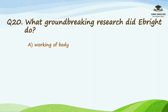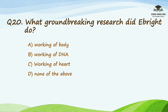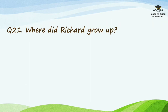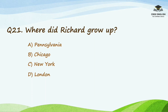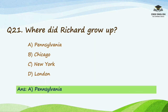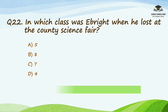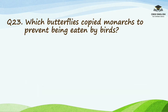Question number twenty: what groundbreaking research did Ebright do? Options are working of body, working of DNA, working of heart, or none of the above. The right answer is working of DNA. Question number twenty-one: where did Richard grow up? Options are Pennsylvania, Chicago, New York, or London. The correct answer is Pennsylvania. Question number twenty-two: in which class was Ebright when he lost at the county science fair? Options are 5, 8, 7, or 4. The right answer is 7.